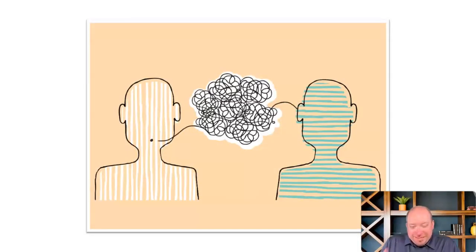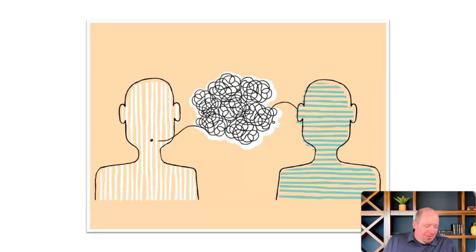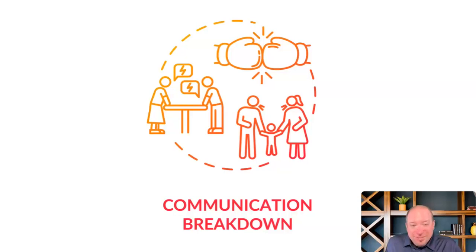You know, in communication, we constantly have times where we're miscommunicating or just not on the same page as someone else. But my friends know that one of the quickest ways to get under my skin and really irritate me is to say, 'Oh, well, we must have had a communication breakdown there.' And they do it all the time because they know it drives me insane, because there is no such thing as a communication breakdown.